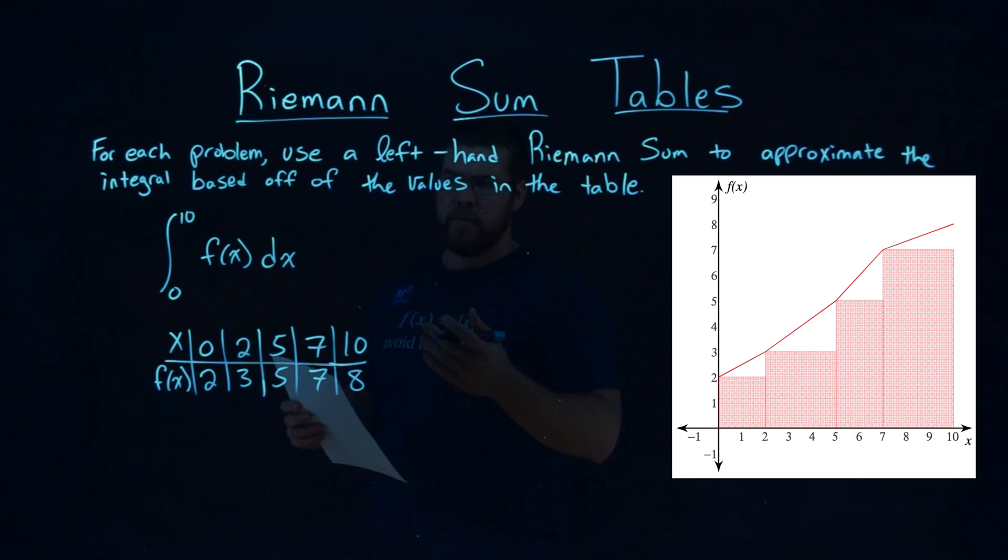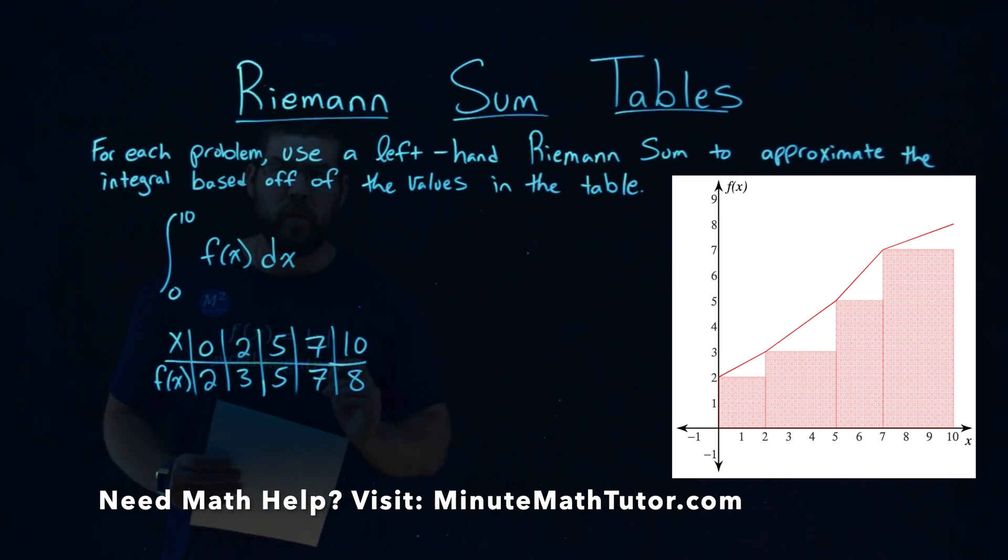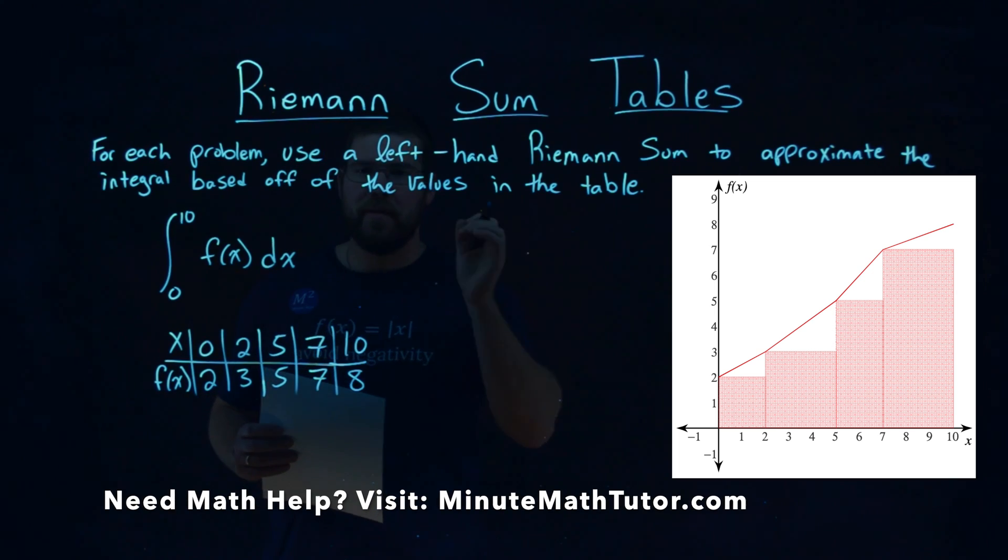We're given this problem right here. We have the integral from 0 to 10 of f of x dx, and we have a table that corresponds with it, and we need to use the left-hand Riemann sum to approximate this integral.